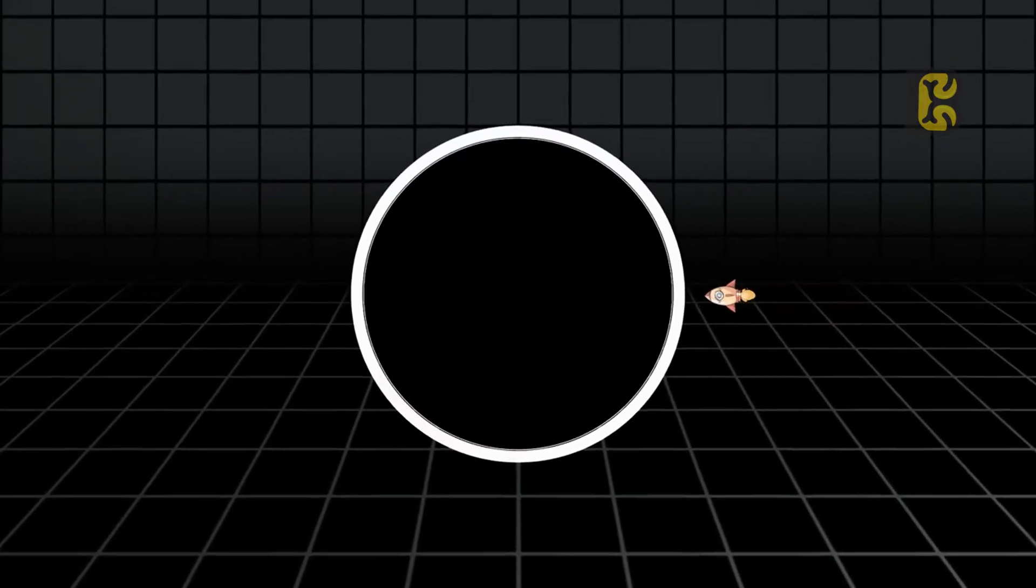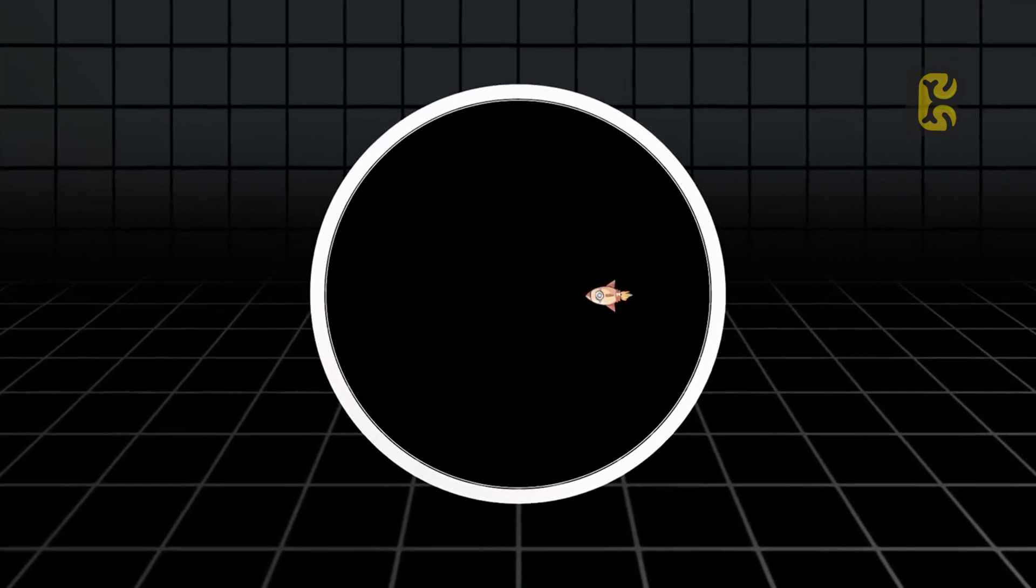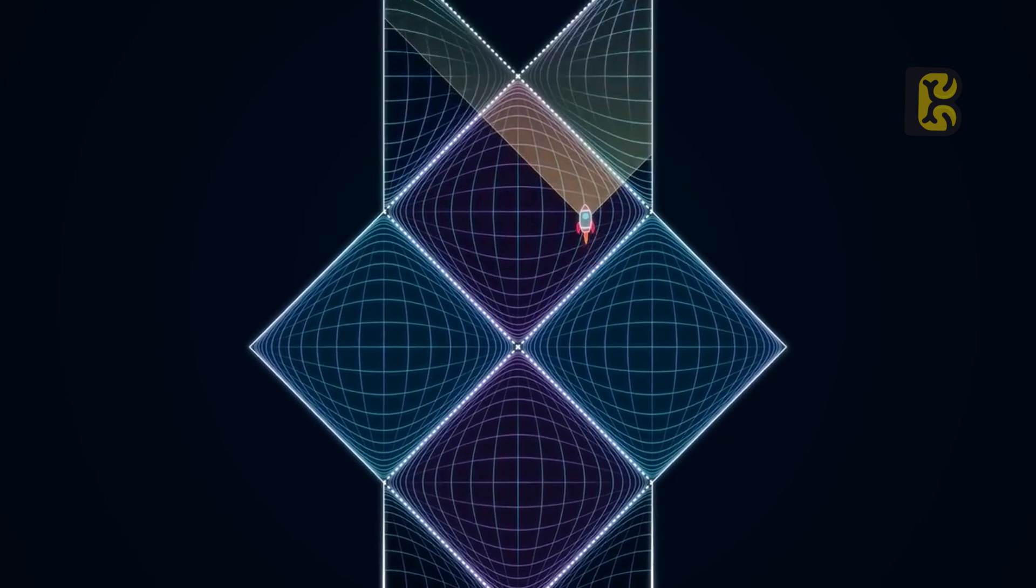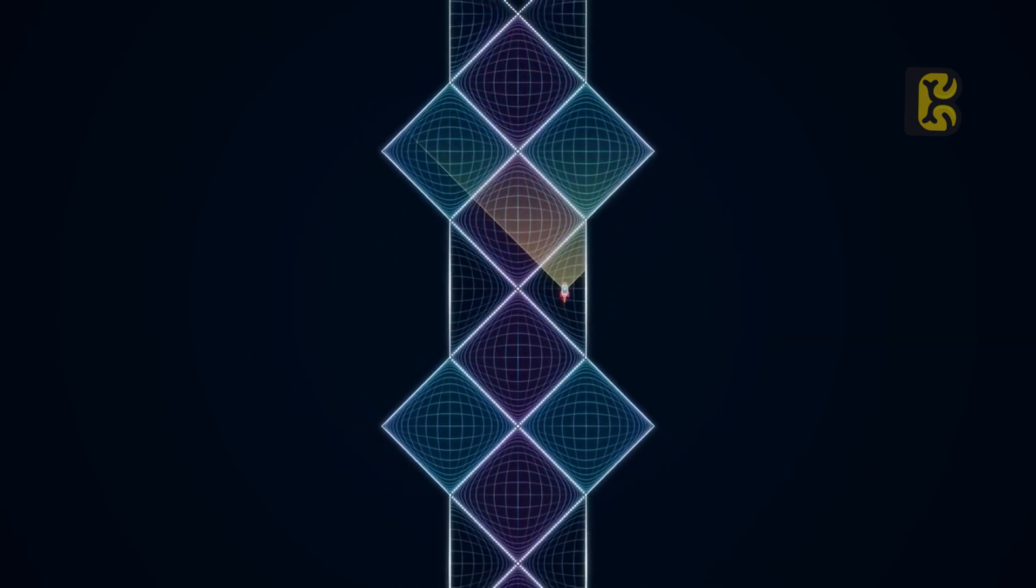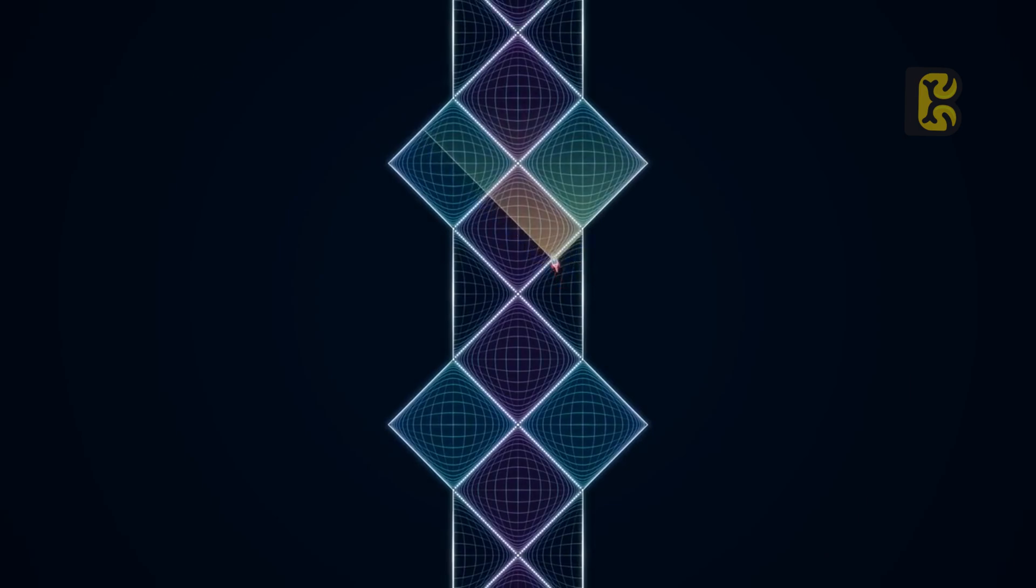Most scientists believe that if you pass through this ring singularity, you will enter a white hole that will eject you into another universe. If Kerr's black hole is fitted into the Penrose diagram, the diagram does not close here, but instead shows other universes on the other side of the black hole, where you can continually travel through black holes and white holes into different universes.